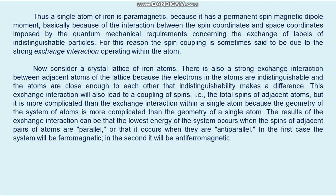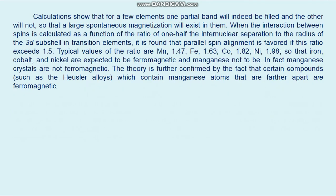A single atom of iron is paramagnetic because it has a permanent spin magnetic dipole moment. In the solid, ferromagnetism arises because of the interaction between spin coordinates and space coordinates imposed by quantum mechanical requirements concerning the exchange of labels of indistinguishable particles. For this reason, the spin coupling is sometimes said to be due to the strong exchange interaction. Calculations show that for a few elements, one spin partial band will be filled and the other will not, so that a large spontaneous magnetization will exist.